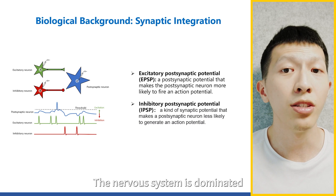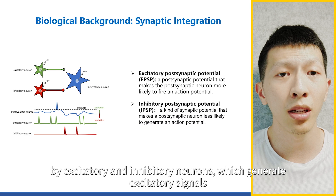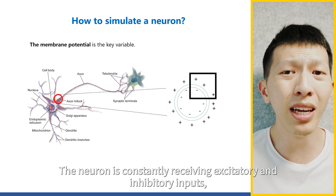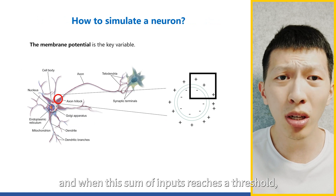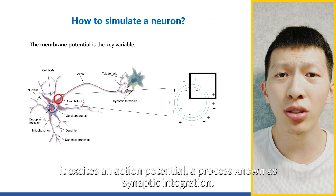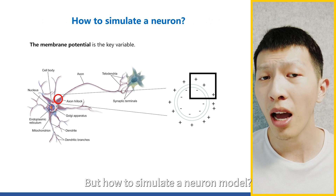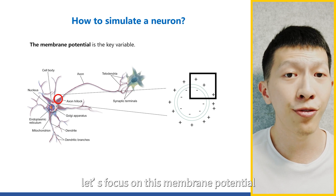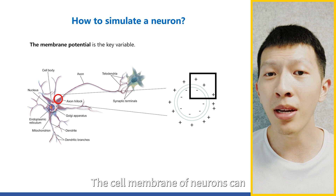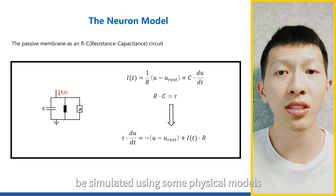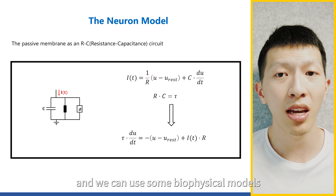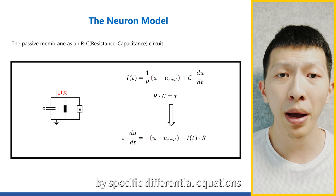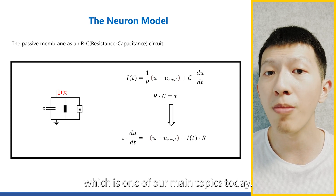Action potentials are all-or-nothing signals characterized by large and rapid changes in membrane potential. The action of thousands of molecules and machines leads to particular ions flowing into or out of the neuron at certain times, giving the characteristic action potential. The nervous system is dominated by excitatory and inhibitory neurons. When the sum of inputs reaches a threshold, the neuron fires — a process known as synaptic integration. But how do we simulate a neural model? The membrane potential is the key variable, and this is one of our main topics today.